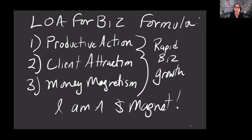We want to wake up inspired and thriving and create freedom out of our business. The number one common vision entrepreneurs share is that we want freedom — freedom of what we do with our time, freedom to determine how much money we make, freedom about how we build our businesses. What most people are missing is that they don't focus on these three things: productive action, client attraction, and money magnetism.